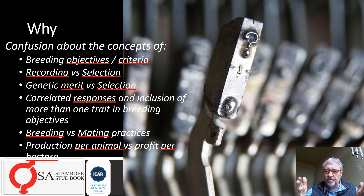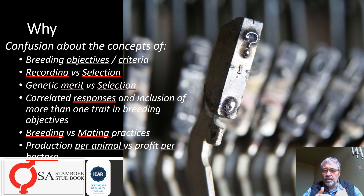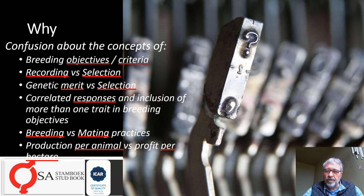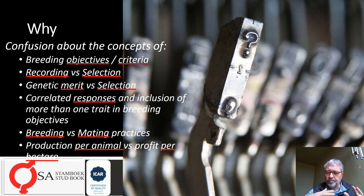If genetic merit — breeding values — for certain traits or properties are available for animals, how do you use it? Are you going to use it in selection? Then a very important aspect is so-called correlated responses. Especially when you select for any trait, you're going to end up with some correlated responses for other traits. Just about every trait or property of an animal is linked to another, so selection for one will definitely influence other traits.